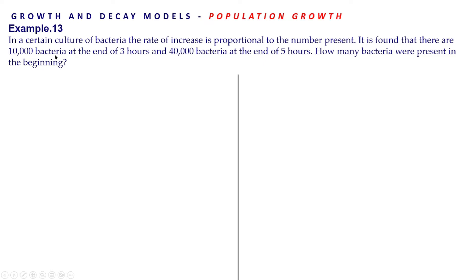All the example questions I have taken from the CBSE handbook. Example 13: In a certain culture of bacteria, the rate of increase is proportional to the number present. It is found that there are 10,000 bacteria at the end of 3 hours and 40,000 bacteria at the end of 5 hours. How many bacteria were present in the beginning?